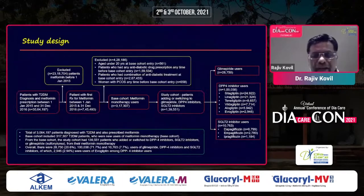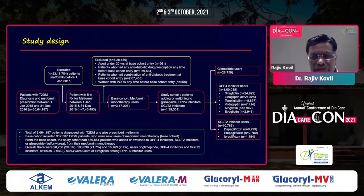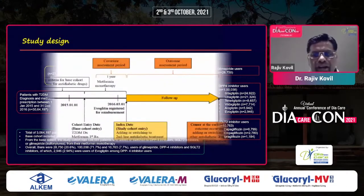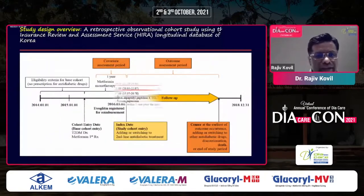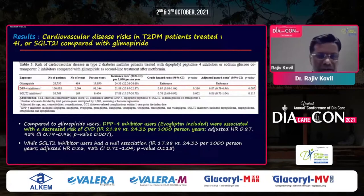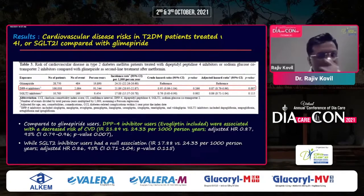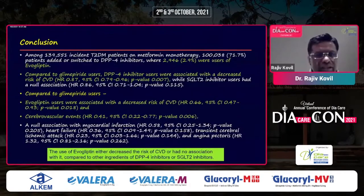The study had 23,000 patients comparing evogliptin and other gliptins. Evogliptin had almost 3,000 patients in its arm, there were SGLT2 users, and almost 100,000 patients on sitagliptin. The longitudinal database from South Korea clearly showed that DPP4 inhibitors were associated with decreased risk of cardiovascular disease compared to glimepiride — quite contrasting to the CAROLINA trial. Compared to glimepiride users, both DPP4 users and evogliptin users were associated with decreased risk of cardiovascular disease.